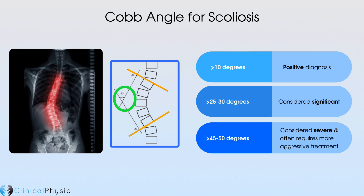A Cobb angle of more than 25 to 30 degrees is considered a significant scoliosis. A Cobb angle of more than 45 degrees is considered a severe scoliosis and often requires more aggressive treatment, because it can lead to issues such as organ compression, which naturally is going to be a problem for the patient.